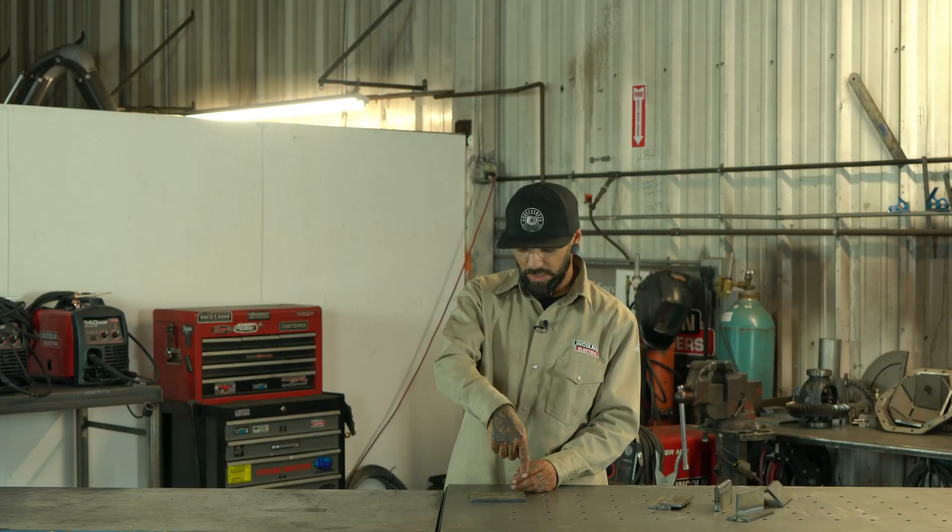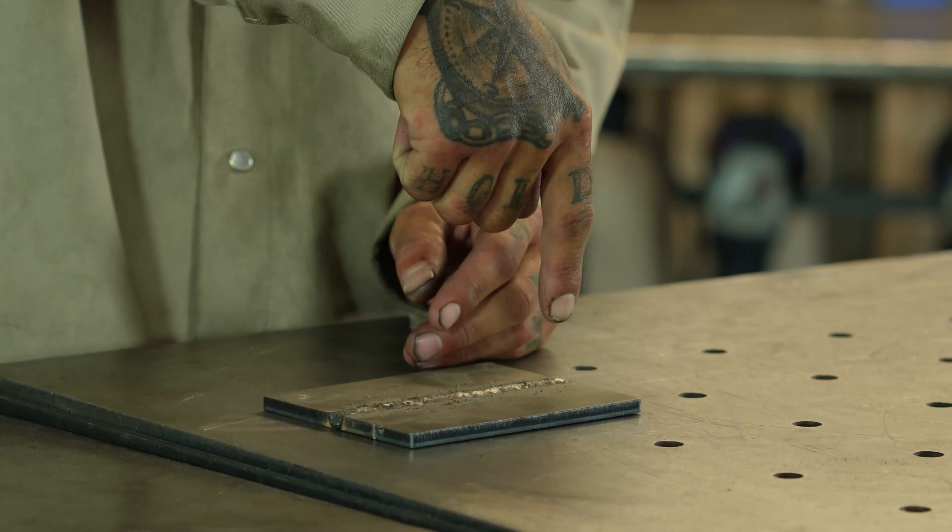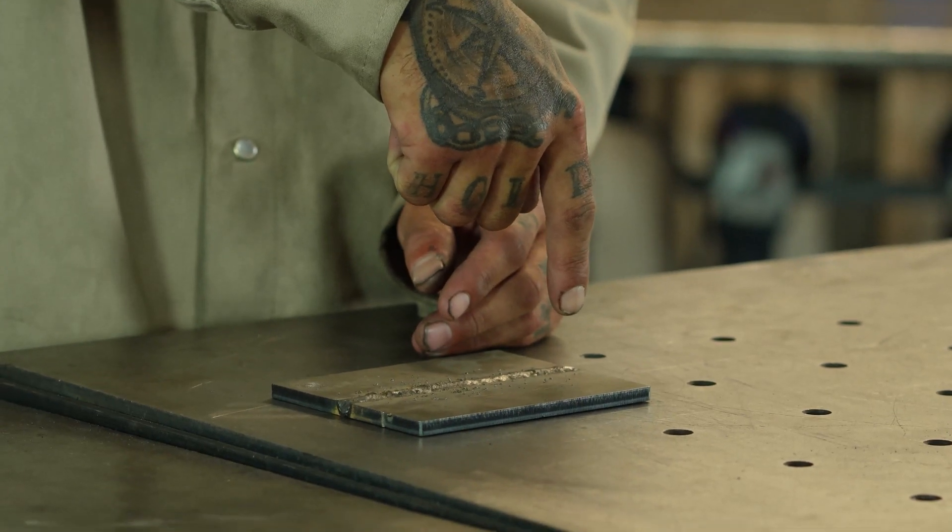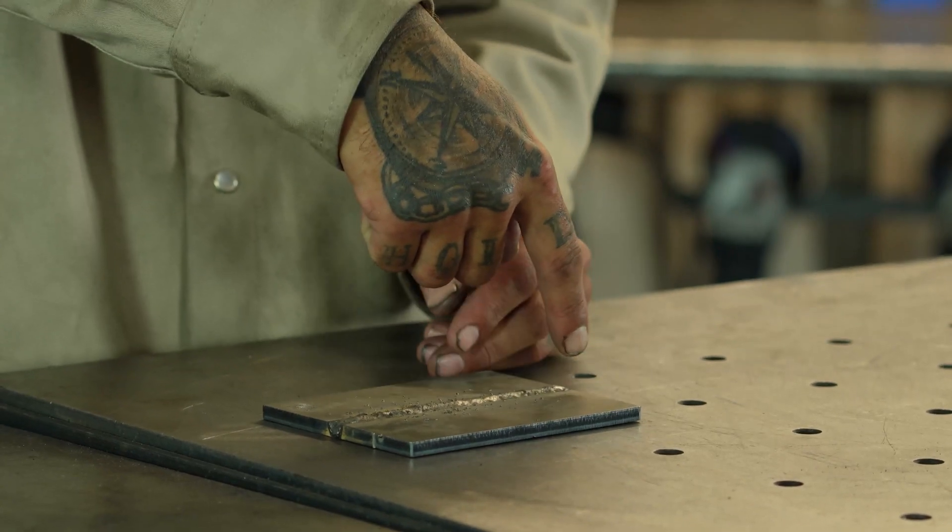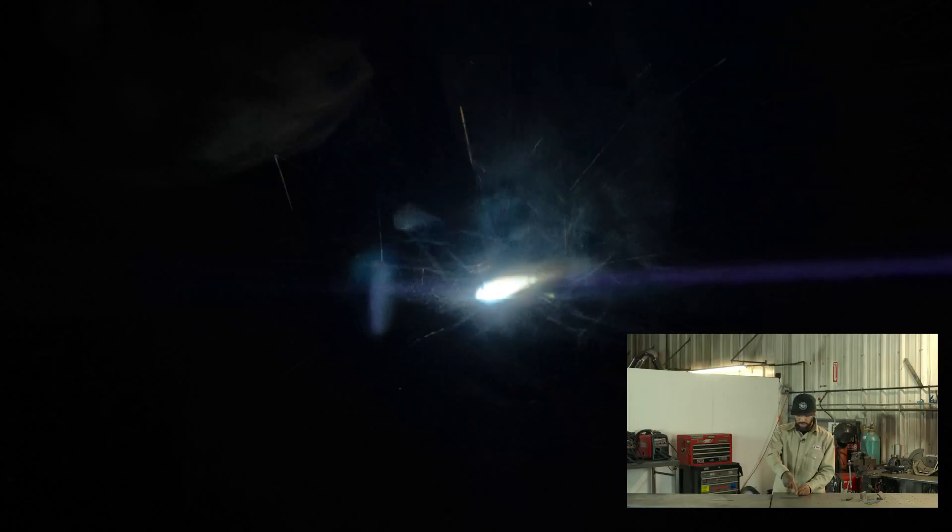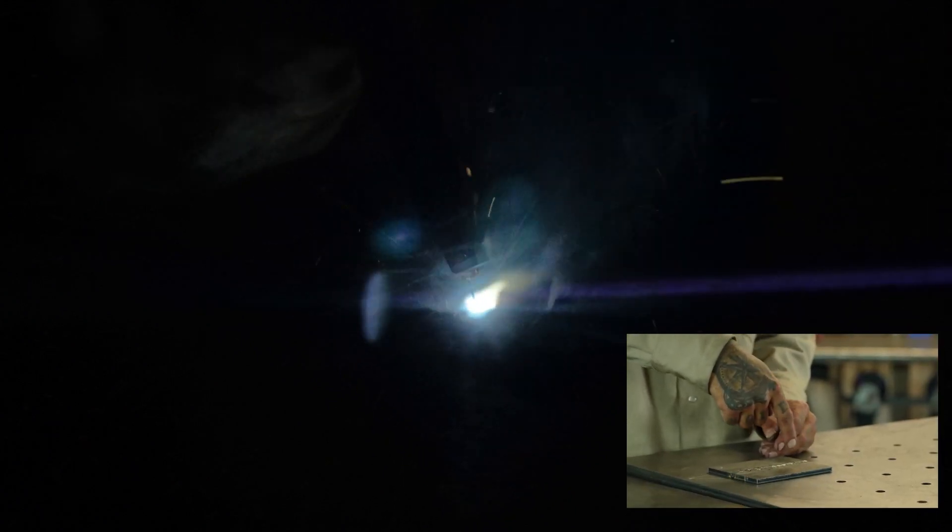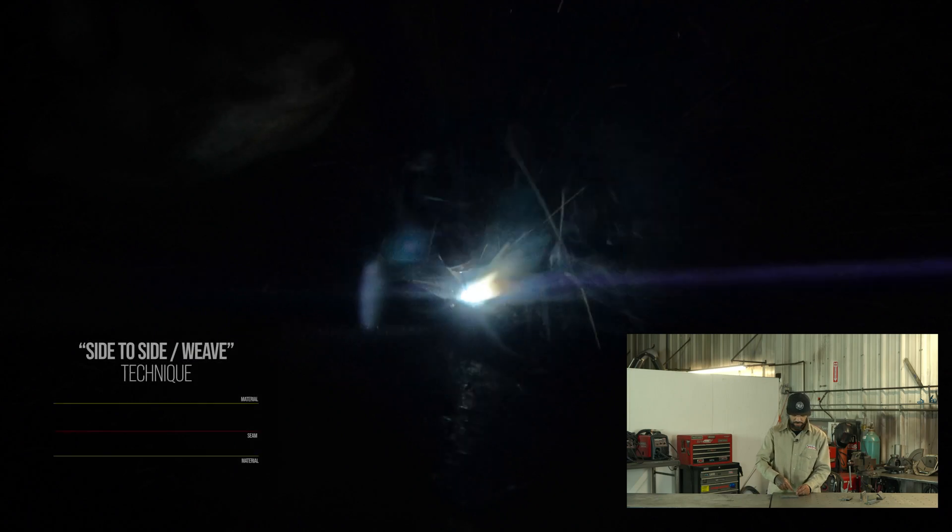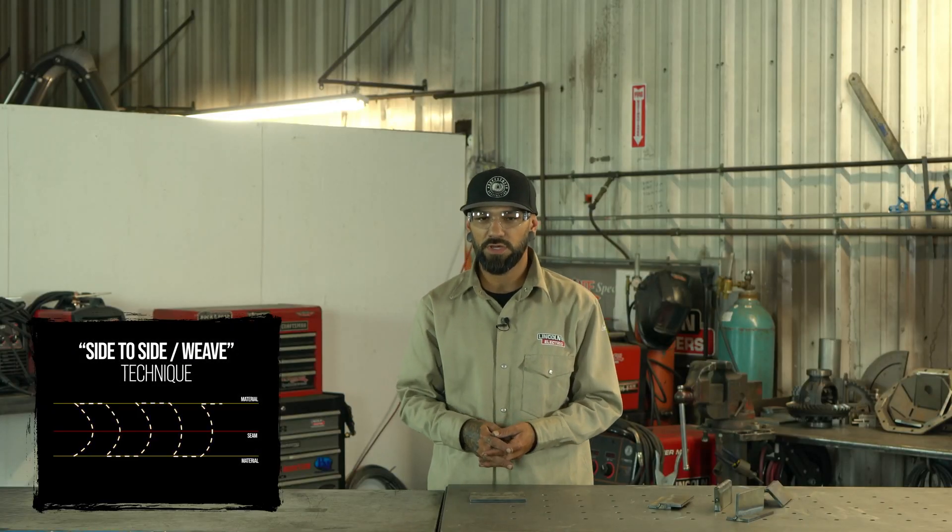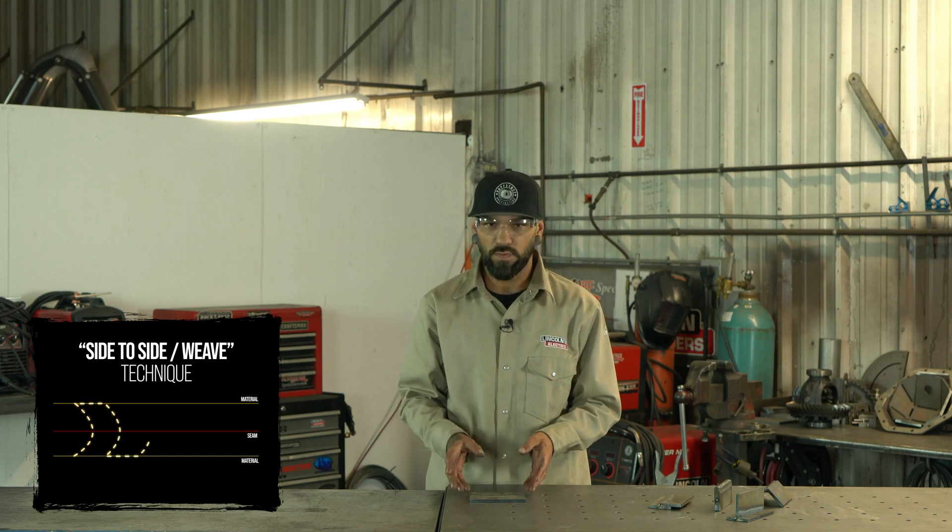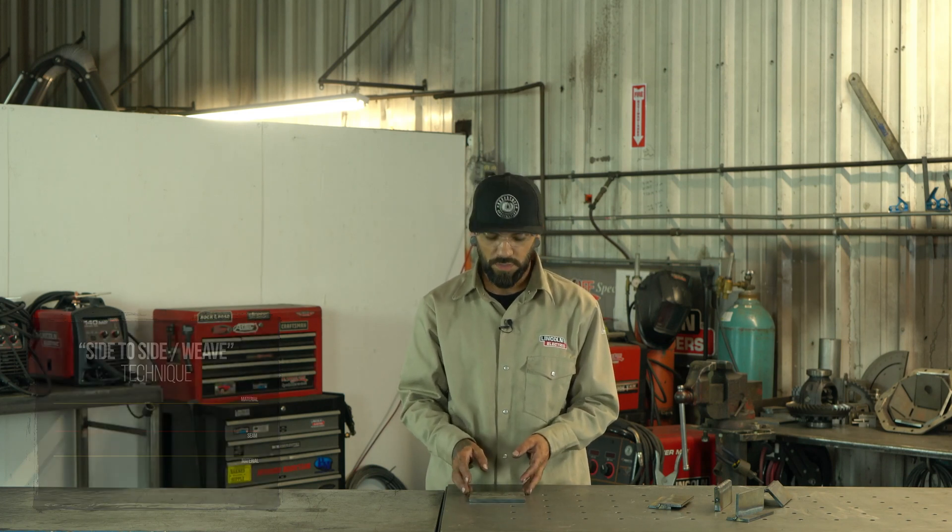I'll stick my gun pretty much at a 90 degree angle tilted just slightly back towards my puddle, and as I'm dragging it back this way I'm just going side to side back and forth very slowly. There's a lot of different techniques to this but that's the one that I use most of the time for the butt joint.